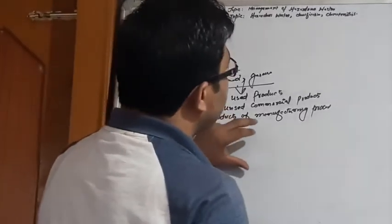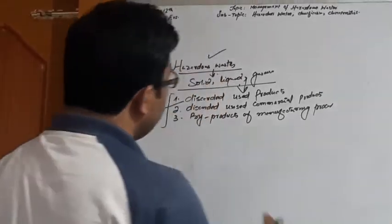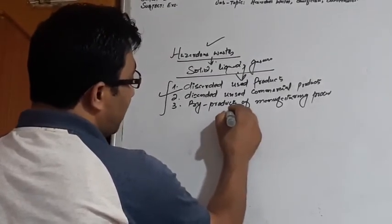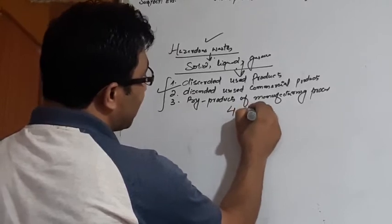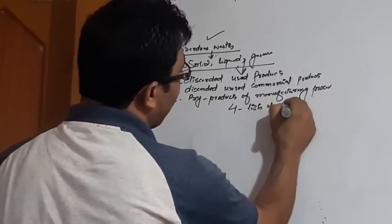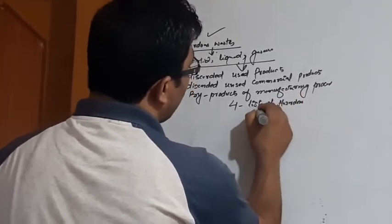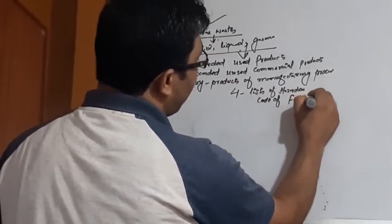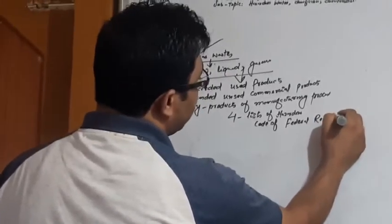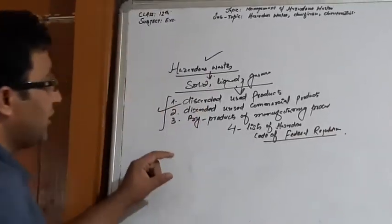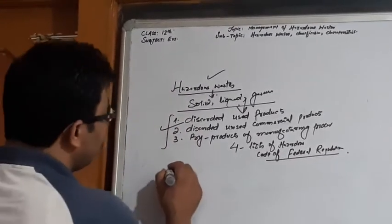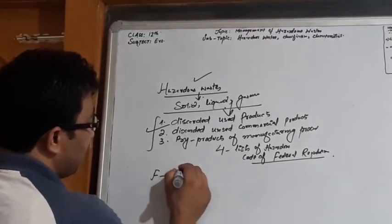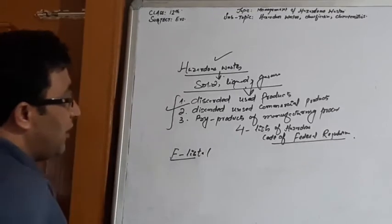And apart from that, if we look at the categories divided by four lists, there have been categorized four lists of hazardous waste under Code of Federal Regulation. In the federal regulation, there are four categories of hazardous waste. The first list is known as F-list.